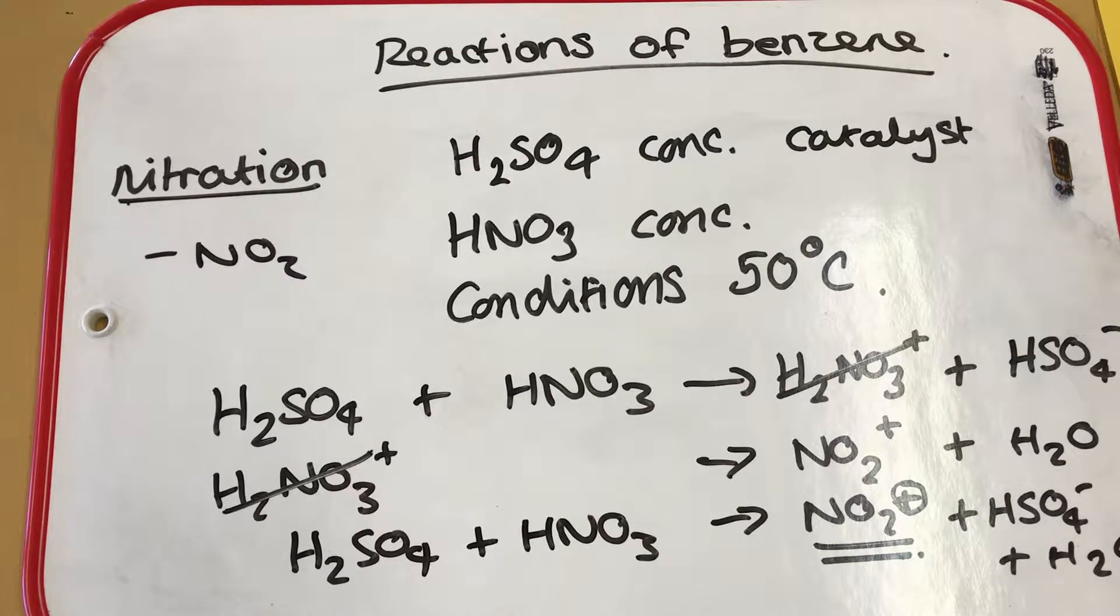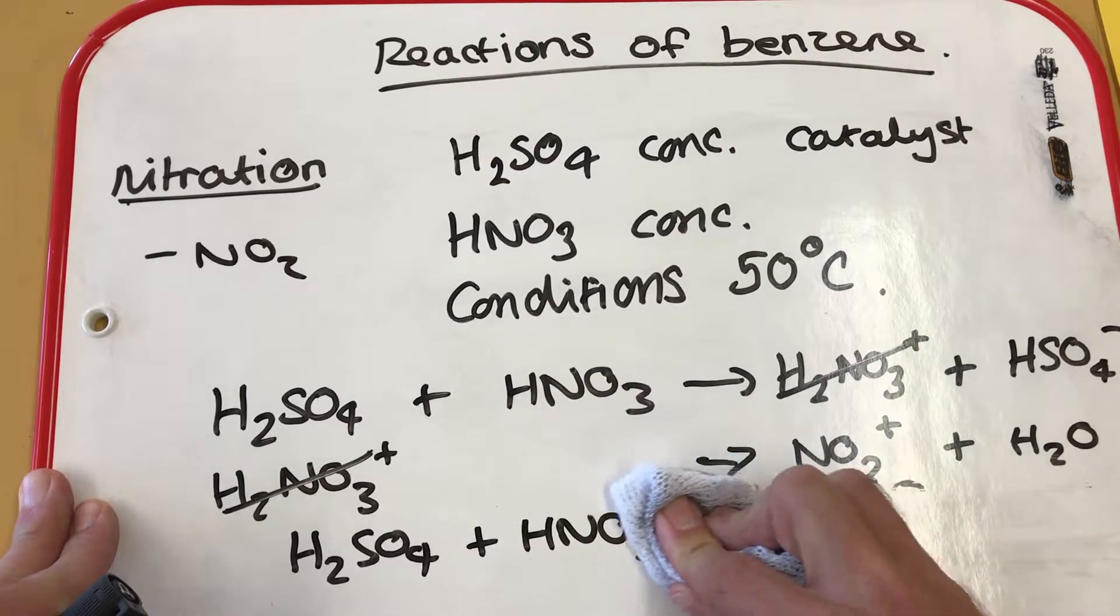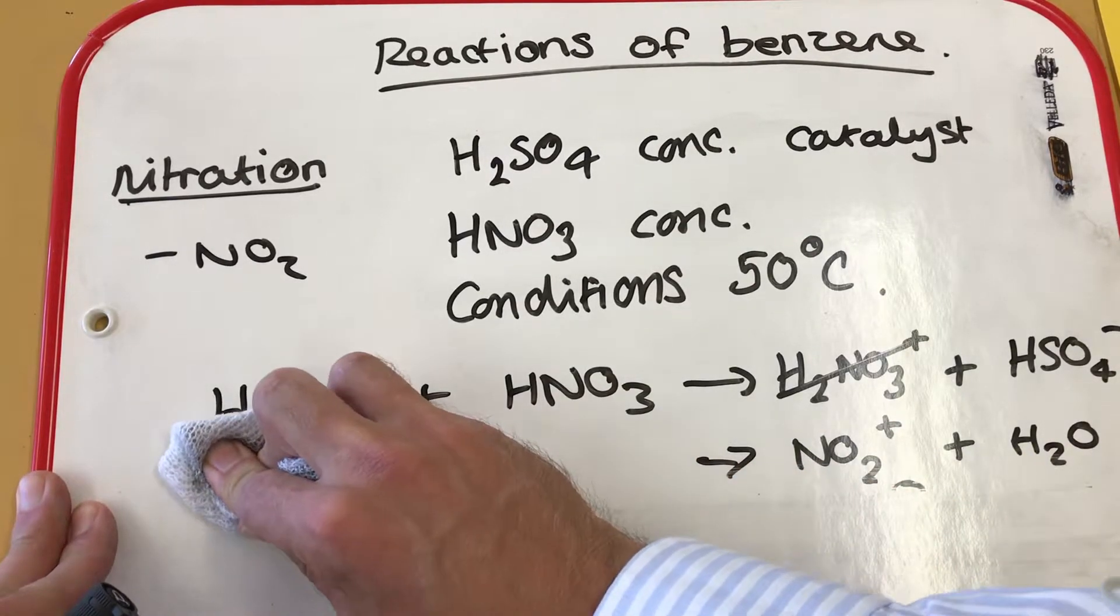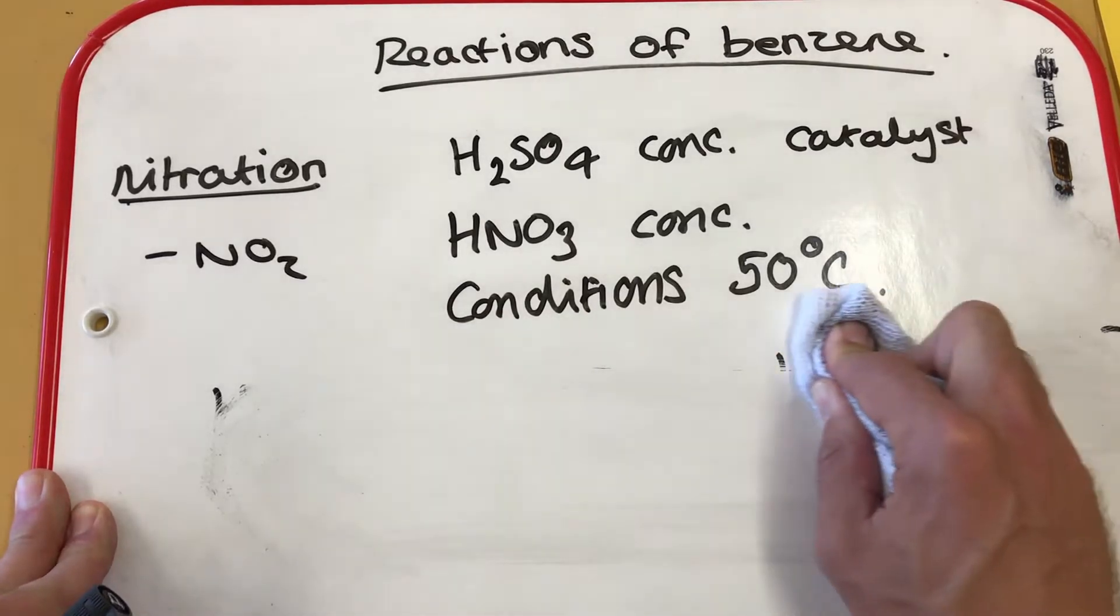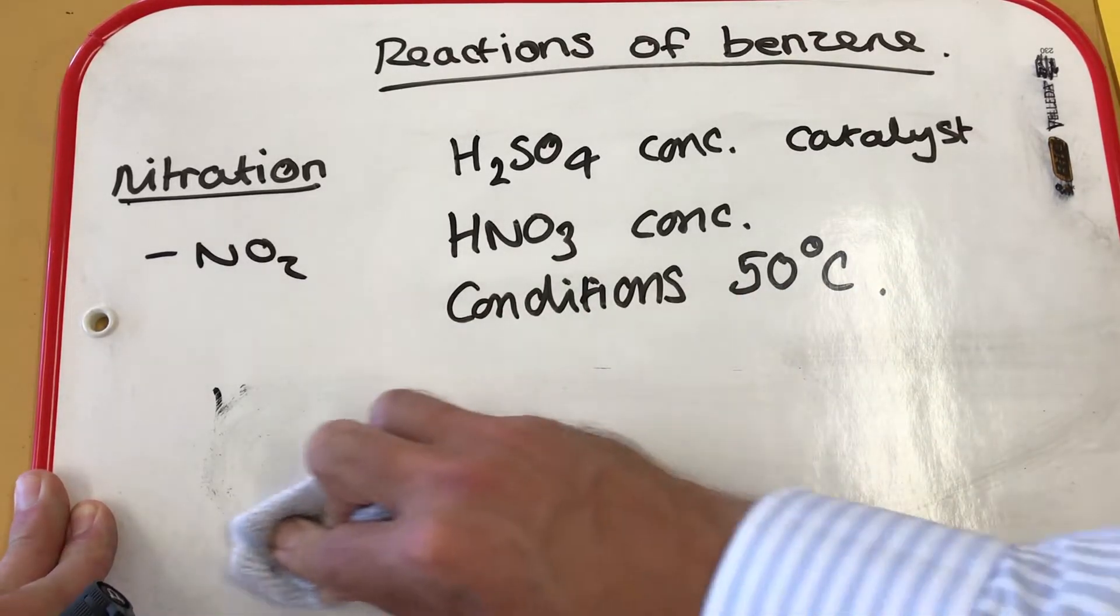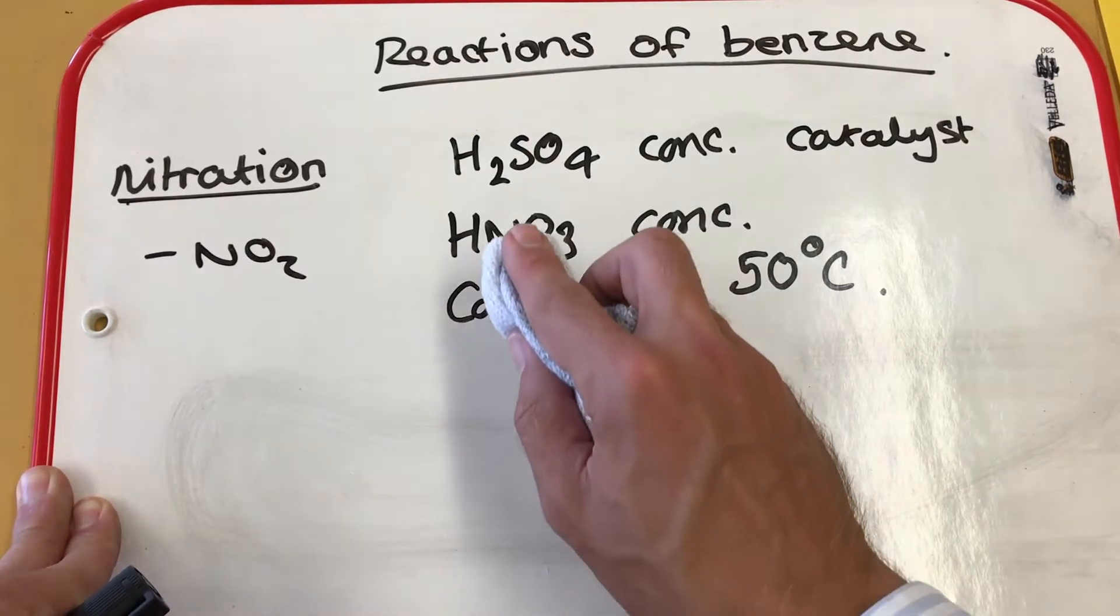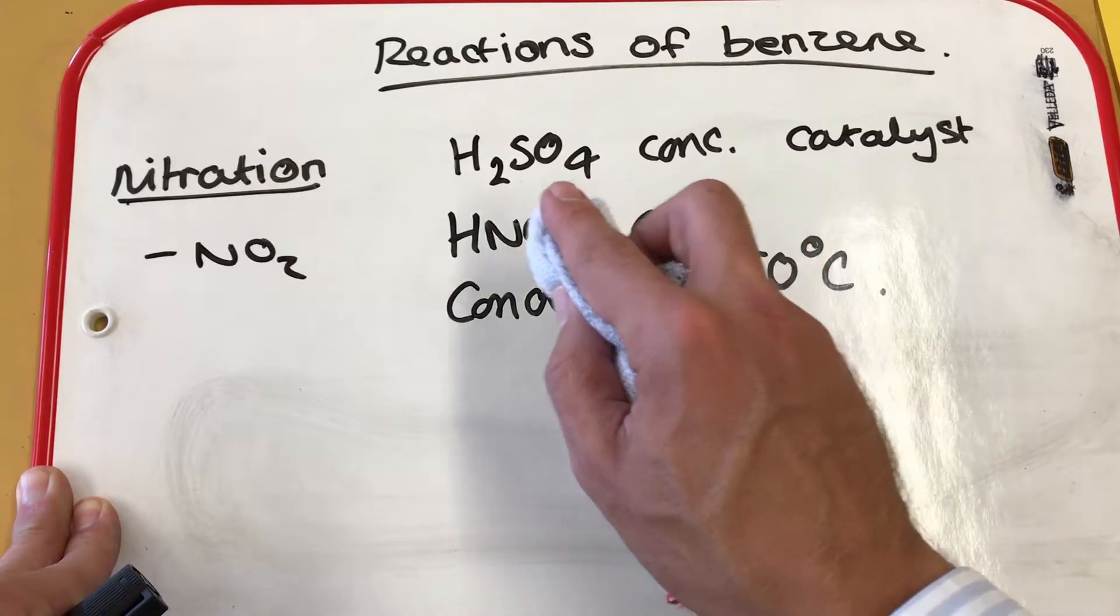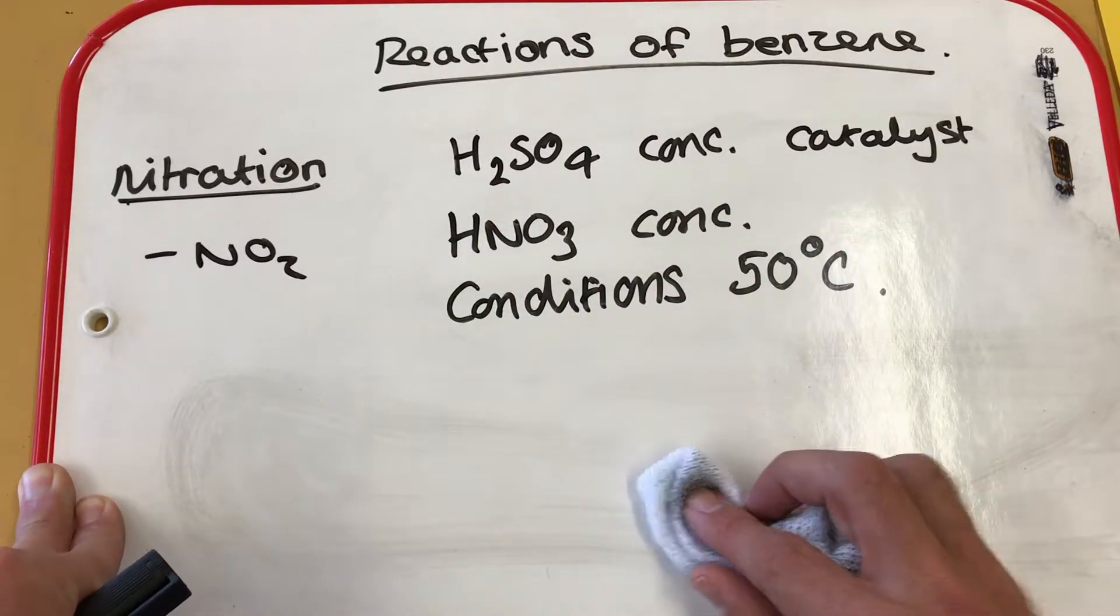The next thing you need to do is draw the mechanism for the reaction. So I'm just going to get rid of all of this. I will write the equation back so you can see the equation involved. Just remember, you need to learn these conditions, you need to identify these conditions, and it is important that you identify that the sulfuric acid catalyst is concentrated and the nitric acid is also concentrated as well.